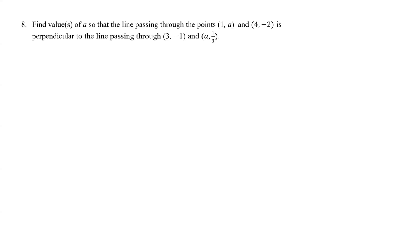Hello everyone. In this problem, we are to find the value of a so that the line passing through the points (1, a) and (4, -2)